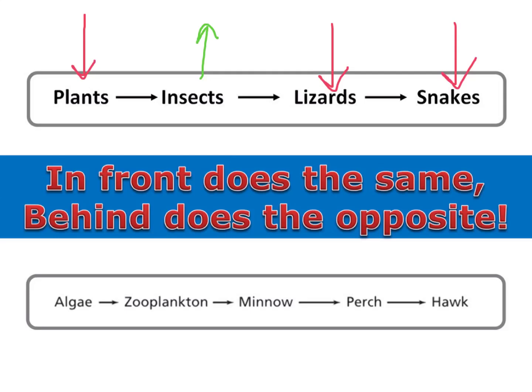In the second food chain, let's say the minnow population increased. In front of the minnows are the perch — that would mean more food for the perch, so they would also increase. And if there are more perch, that means more food for the hawks, so that population would increase too.